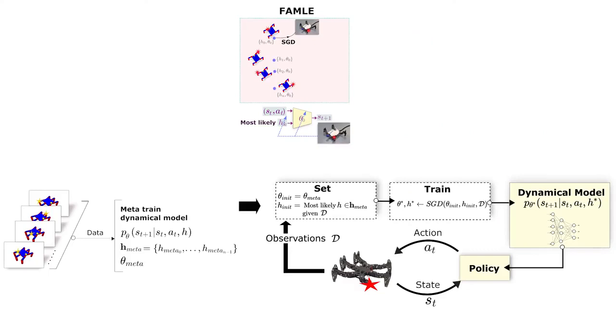At each model learning step, the robot initializes the model with the meta-trained model parameters and the most likely meta-trained embedding based on the observed data from the robot. Then it updates both the embeddings as well as the parameters with a few gradient steps. The model is then used for optimizing the future actions until the next model learning step.